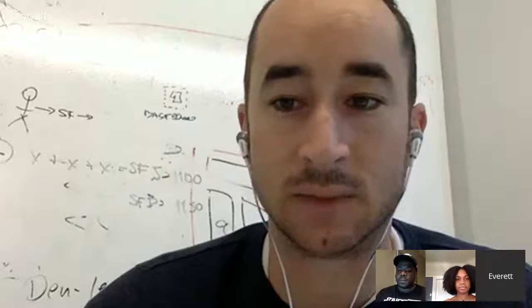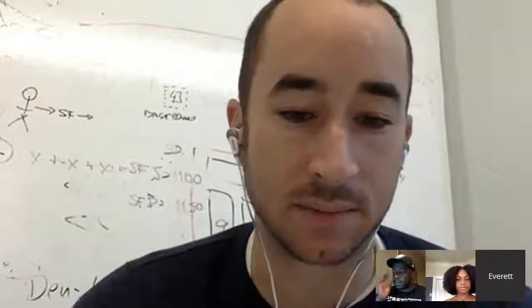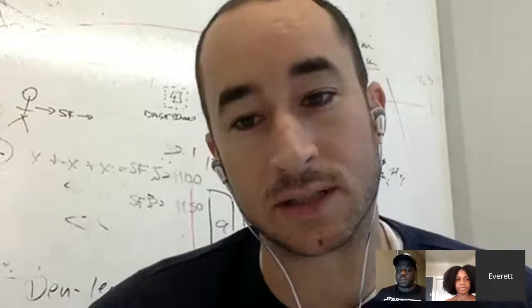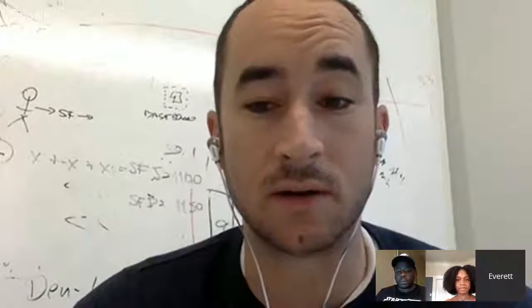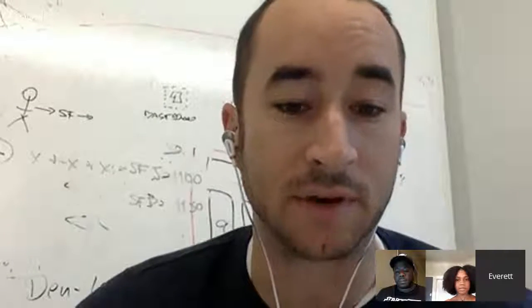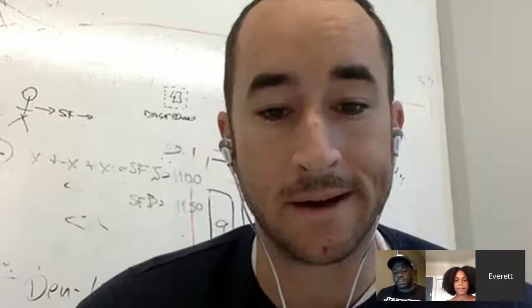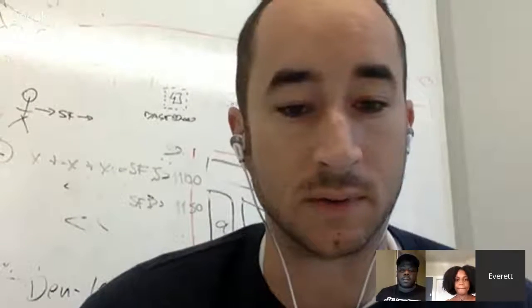Yeah, of course. So my name's Everett Wechler. I'm a CTO at Bayes Impact. We're a non-profit tech startup. And so my background's in computer science. I studied computer science and electrical engineering in school. I went to Duke on the East Coast, and I came out here to California almost nine years ago to work for Google, where I was a software engineer for about five years.